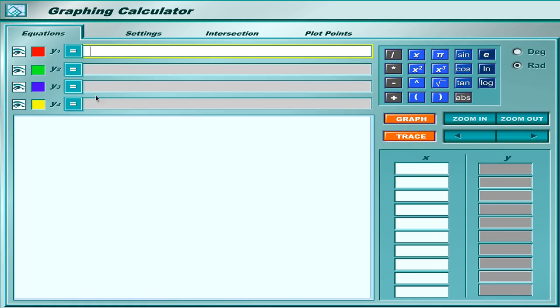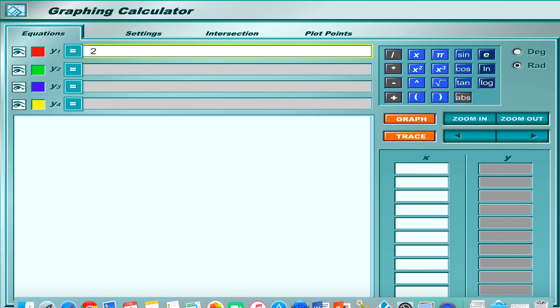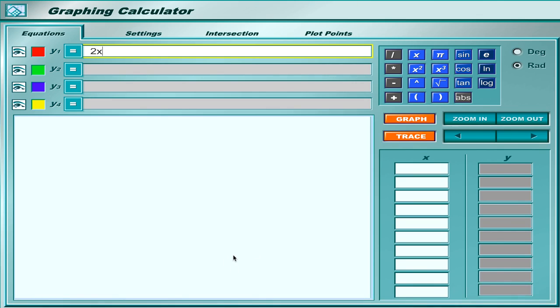If I were to give you the equation 2x, I can type the 2x from a keyboard, or I could type the 2 and push this x over here on the side. If you notice when I click this x, it puts an x in.